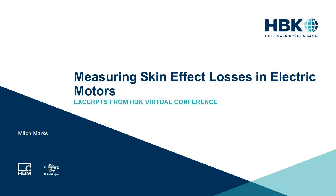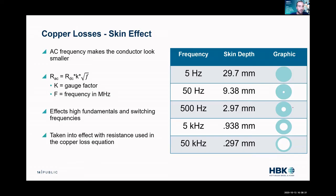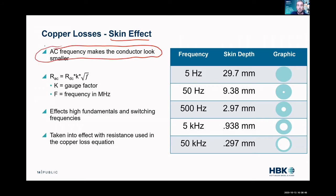Resistance is not as simple as just temperature — there are other factors if you really want to get into the fine details. All of these things are as complicated as you want to make them. But it's worth mentioning skin effect: there's a phenomenon called skin effect where an AC frequency makes a conductor look like it's physically smaller from a resistance point of view. In my graph on the right, I try to illustrate this. If we're putting a 5 Hz AC frequency through a conductor, it has a skin depth of 29 millimeters.